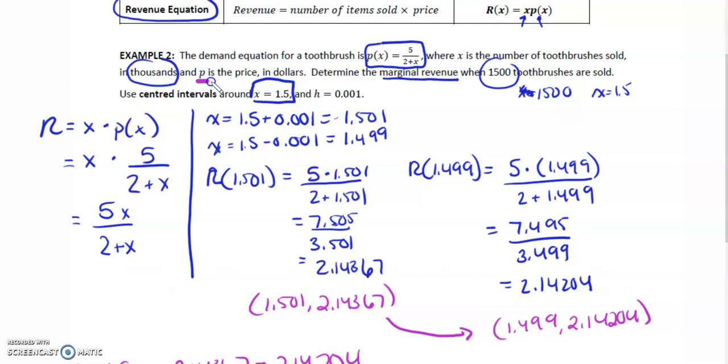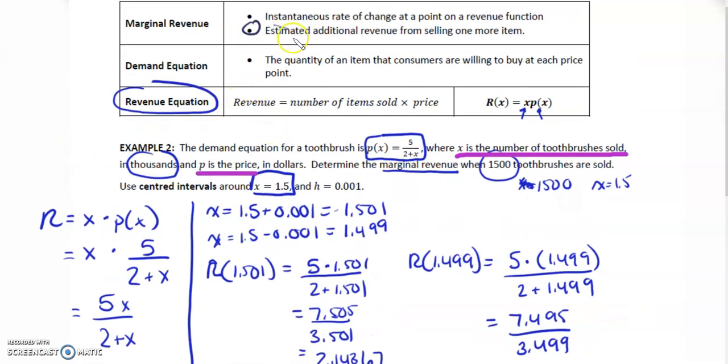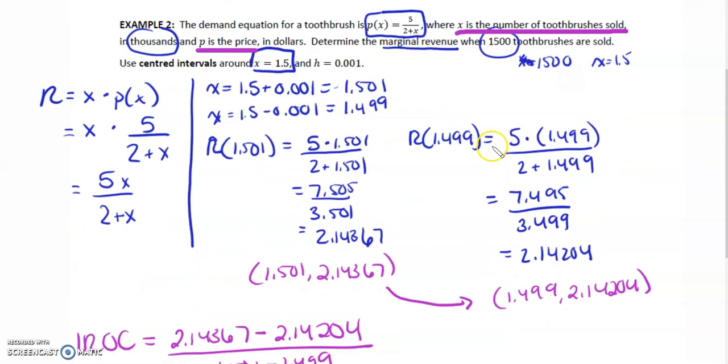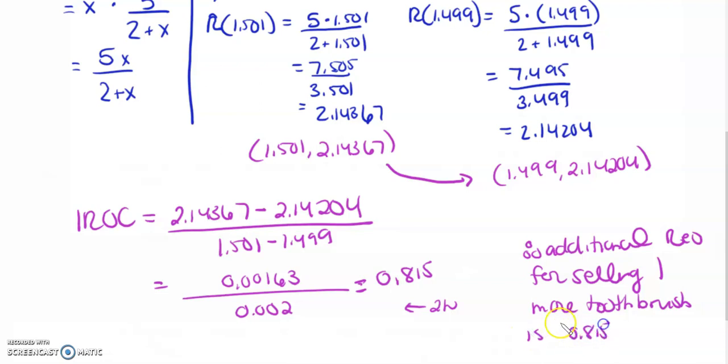P is the price, x is the number of toothbrushes sold. The marginal revenue is additional revenue from selling one more item. Therefore, additional revenue for selling one more toothbrush is 0.815 dollars per toothbrush. Let's round it to 2 decimals, that makes more sense: 82 cents.